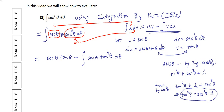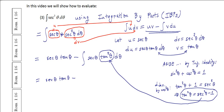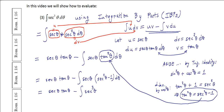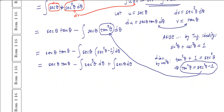Substituting this result for tan squared theta, we can write the expression as secant theta tan theta minus the integral of secant theta times (secant squared theta minus 1) d theta. Expanding this, we get secant theta tan theta minus the integral of secant cubed theta d theta, plus the integral of secant theta d theta.